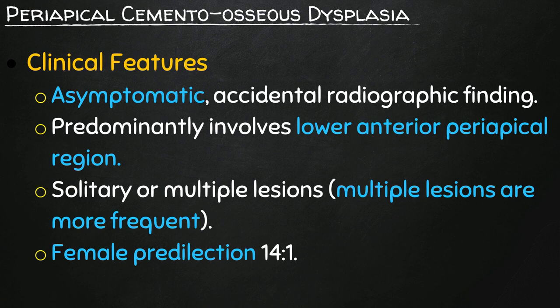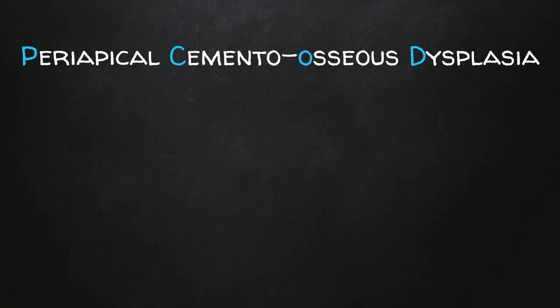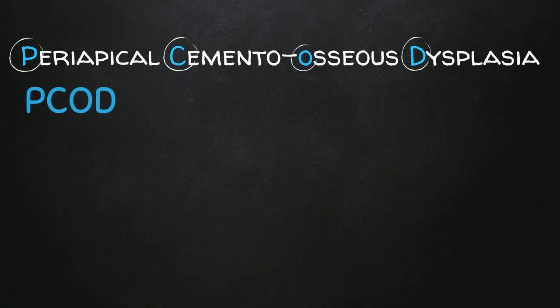All these features might seem almost impossible to remember and relate with the name of the disorder, but there is nothing impossible with mnemonics. If we look at the name of the disorder — periapical cementoosseous dysplasia — and take the very first letter of each word, we get PCOD.